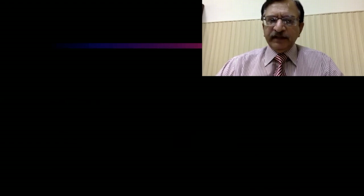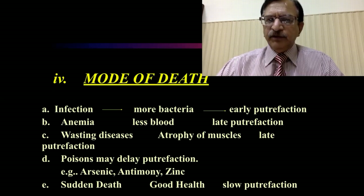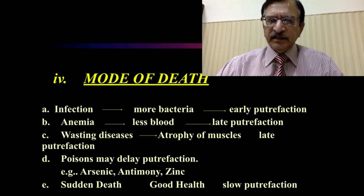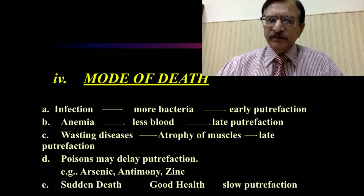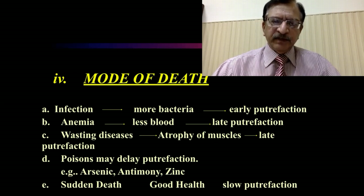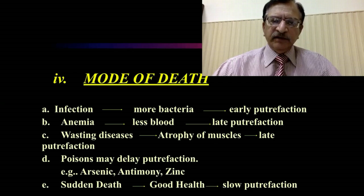Mode of death: in infections there are more bacteria so putrefaction is early. In anemia, there is less blood supply so putrefaction is delayed. In wasting diseases, atrophy of muscles causes late putrefaction. Certain poisons may delay putrefaction — metallic poisons like arsenic, antimony, and zinc delay the process. Similarly, in cases of sudden death where the body is in good health, there will be slow progression of putrefaction.